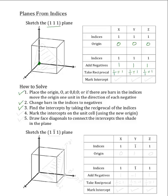Now the next step is to mark these intercepts on the unit cell. So we will start at our origin and we will travel 1 unit in the positive x-direction, which will place us right here. Now for our y-intercept, we will go back to our origin and travel 1 unit in the positive y-direction, which will place us right here. And for our z-intercept, we will again go back to the origin and travel 1 unit in the positive z-direction, which will place the intercept right here.